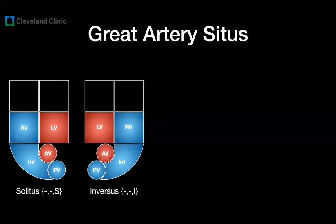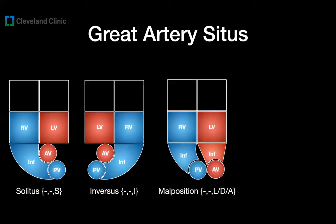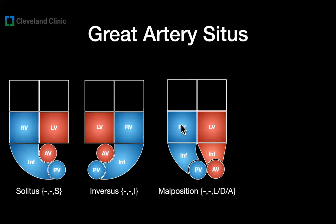The second option is inversus, represented with the letter I — still considered normal — just a mirror image of solitus. In this case the aorta is posterior and leftward to the pulmonary valve; the right ventricle still connects to the pulmonary valve; the LV connects to the aorta; and there is a sub-pulmonary infundibulum. The third option is malposition — to the left represented with the letter L, to the right with D, or anterior with A. In this case the location of the great arteries is off, but there is still normal ventriculo-arterial alignment: the LV connects to the aorta and the RV connects to the pulmonary artery, but the normal spatial relationship between the great arteries is no longer present.